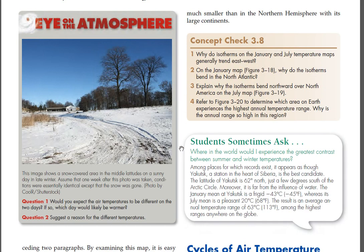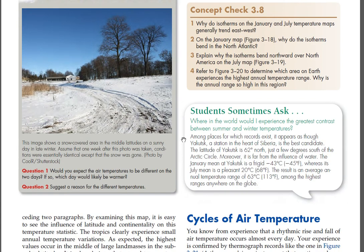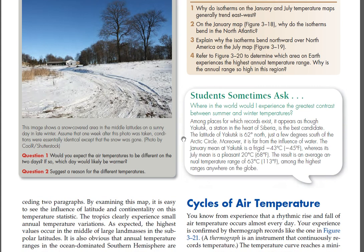Students sometimes ask: where in the world would I experience the greatest contrast between summer and winter temperatures? Among places for which records exist, it appears as though Yakutsk, a station in the heart of Siberia, is the best candidate. The latitude of Yakutsk is 62°N, just a few degrees south of the Arctic Circle, and it is far from the influence of water. The January mean at Yakutsk is a frigid −43°C (−45°F), whereas its July mean is a pleasant 20°C (68°F). The result is an average annual temperature range of 63°C (113°F), among the highest ranges anywhere on the globe.